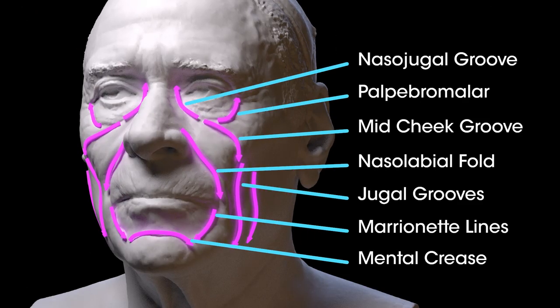Hey there, my name is Ryan Kingsline and welcome to Level Three: Structure of the Head. In this lesson our goal is to learn a basic roadmap for the human face that we can use to help us get a better likeness, or to create work from our imagination that's more authentic and more realistic.